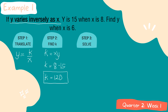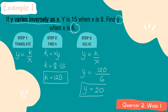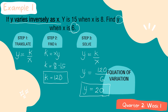For the last step, we determine the value of Y when X is equal to 6. Using the equation from step one, Y is equal to K over X. Substituting K equals 120 and X equals 6: Y is equal to 120 divided by 6, which equals 20. Therefore, the value of Y when X is 6 is equal to 20. The equation of variation is Y is equal to 120 over X, since the value of K is equal to 120.